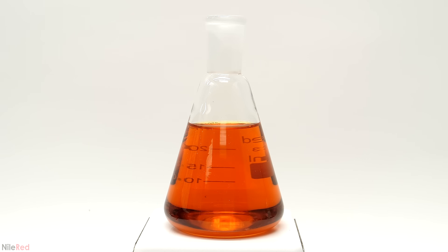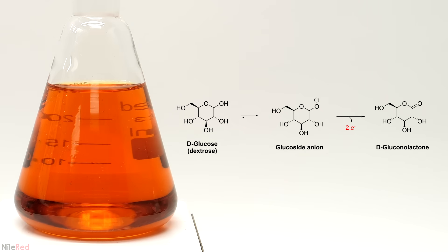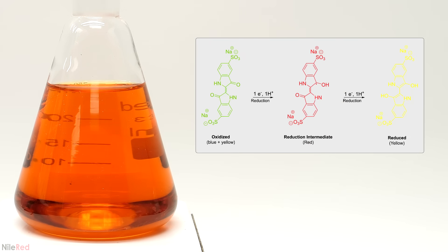In this solution though, I've mixed in glucose which is known as a reducing sugar. And in the presence of a strong base like sodium hydroxide it reacts to form something called a glucoside anion which wants to donate a pair of electrons. These electrons are then picked up by the indigo carmine which first reduces it to a red form and then to a yellow one. As far as I know though the exact mechanism of this process isn't really known and I don't think the structure of the red intermediate has ever been proven. However, based on a couple sources that I found it does seem like this is probably what it looks like.